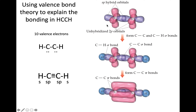The two sp hybrid orbitals will contribute to a sigma bond with a hydrogen atom and a sigma bond as it overlaps with the sp on the other carbon. What's left over: in the mixing, we combined an s orbital with a p orbital, leaving two p orbitals remaining — oriented up and down and front to back — and that would be true on both carbon atoms.